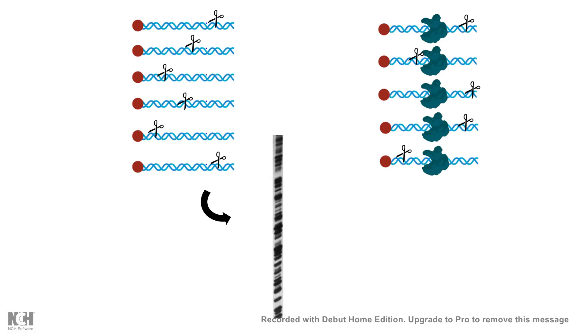Now if we run those same fragments in the gel we would see fragments in all particular locations except in a location you would see no bands. The location where we see no bands, that is the footprint of the protein on the DNA.